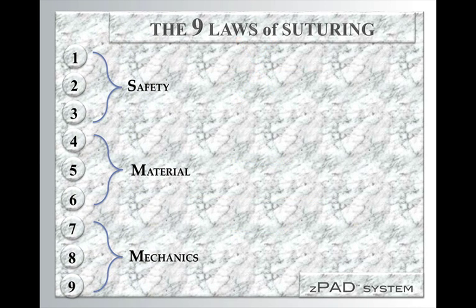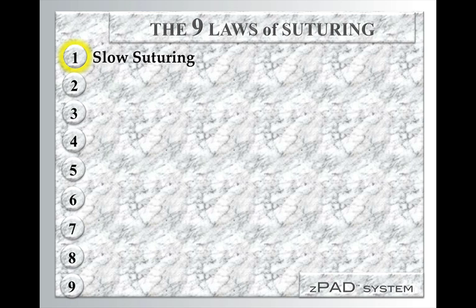I also started describing the nine laws of suturing that have to do with suturing safety, the choice of material, and also the suture mechanics. I described to you the first law of suturing, and the first law is very simple: slow suturing. If you suture slowly, you're much more accurate and precise, you're promoting safety, and all in all, you're getting a better technique, better suturing and surgical outcome. And all it takes is just to slow down, and you'll definitely get better.